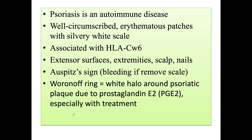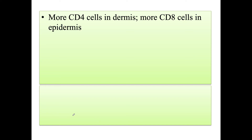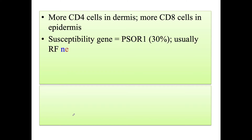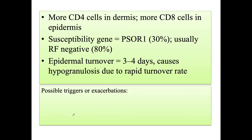Woronoff ring is seen, which is a white halo around the psoriatic plaque due to prostaglandin E2, and is seen especially with treatment. More CD4 cells are seen in the dermis and more CD8 cells are seen in the epidermis. The susceptibility gene is PSORS1, and it is usually rheumatoid factor negative. Epidermal turnover is increased to 3 to 4 days, causing hypogranulosis due to rapid turnover rate.